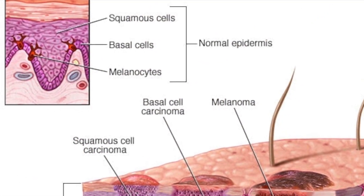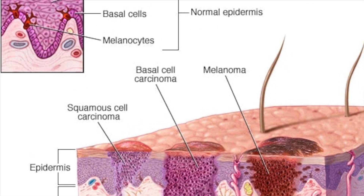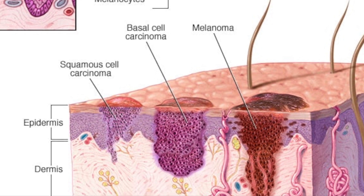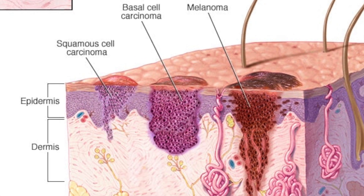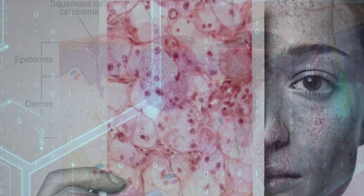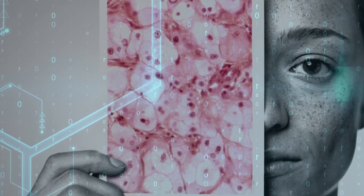Skin cancer occurs when errors — mutations — occur in the DNA of skin cells. The mutations cause the cells to grow out of control and form a mass of cancer cells.